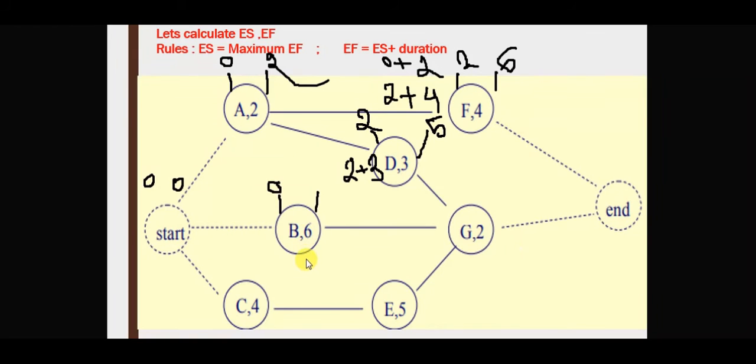Take the maximum. The earliest finish is earliest start plus duration - 0 plus 6 equals 6. For activity C, the earliest start is 0 plus 4, which equals 4. Take the maximum - 4 plus duration 5 equals 9.